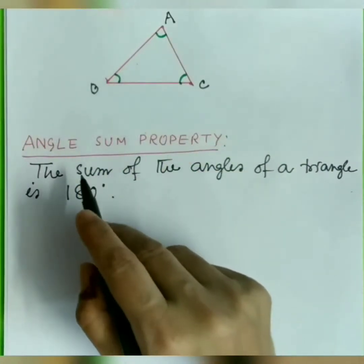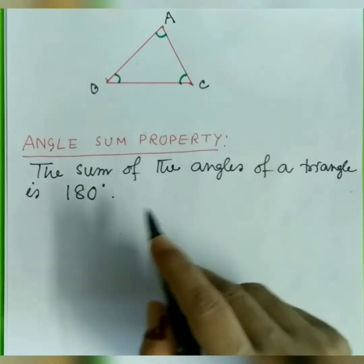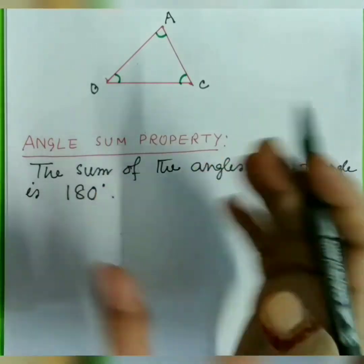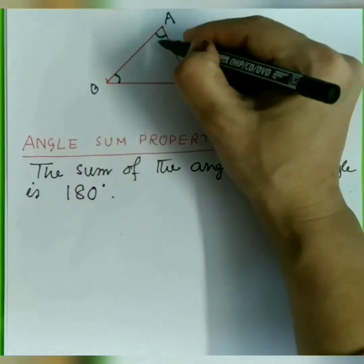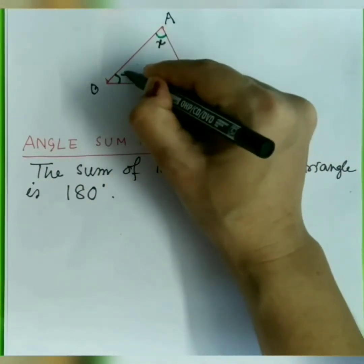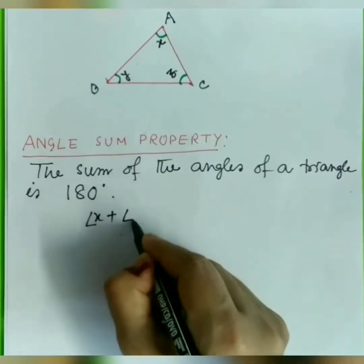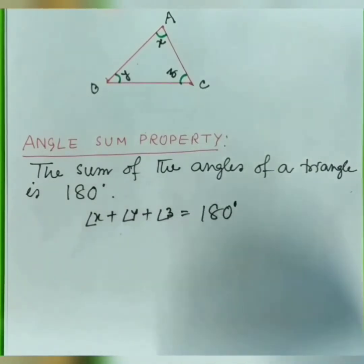Hi guys, welcome to my channel. This is introductory video part 2. Property number one: angle sum property. The sum of the angles of a triangle is 180 degrees. I think it's known to all. If ABC is a triangle and I name the angles X, Y, and Z, then angle X plus angle Y plus angle Z is equal to 180 degrees.